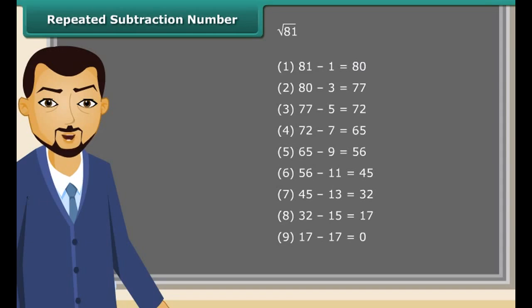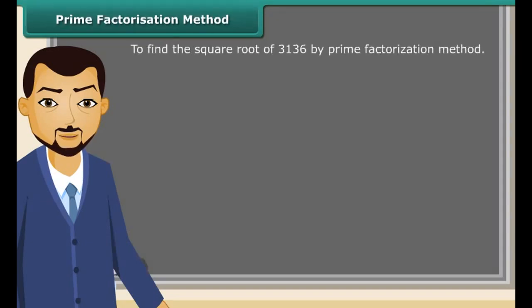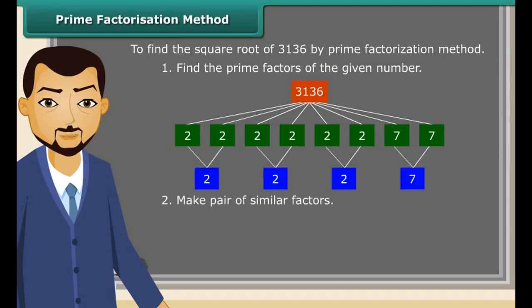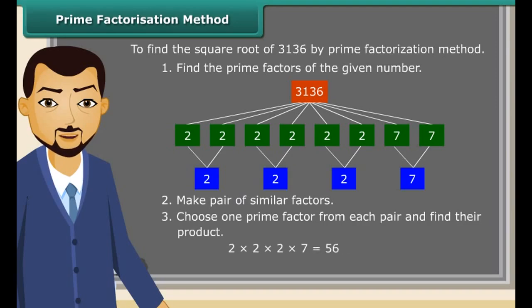Now we will try to find the square root of a number by the prime factorization method, by following some steps. First, find the prime factors of the given number. Next, make pairs of similar factors. Then choose one prime factor from each pair and find their product. The product thus obtained is the square root of the given number.